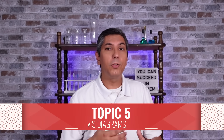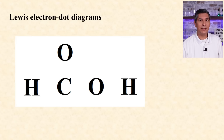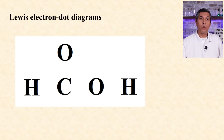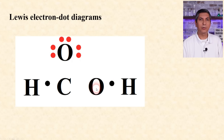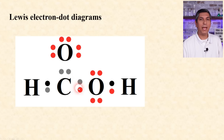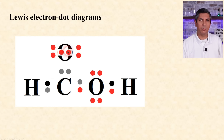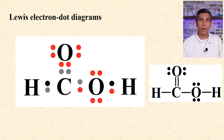Lewis electron dot diagrams are visual representations of the molecular structure of a molecule. I recommend always starting with the outside of the molecule and working your way in. Hydrogen is stable with two valence electrons, and the others are usually trying to have an octet. So hydrogen brings in one valence electron each, the oxygens bring in six dots each, and the carbon brings in four dots. If the carbon in the middle only has six dots and needs eight, move a pair of dots from the oxygen down to form a double bond between the carbon and the oxygen.